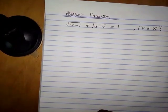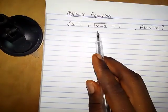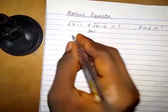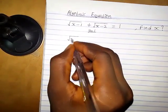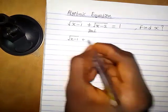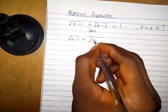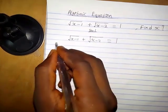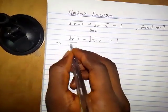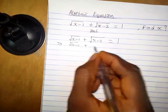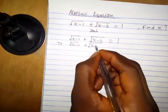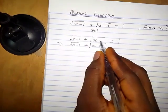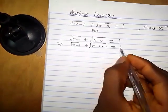Let's take a look at this algebraic equation and find the value of x. We have square root of x minus one plus square root of x minus two equals one. This can be rewritten as square root of x minus one plus square root of x minus one minus one, since minus one minus one gives minus two, which equals one.